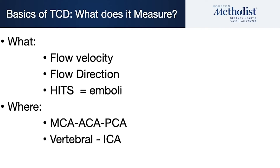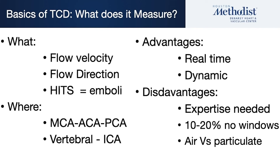For the simple surgeon: what does TCD tell me? Flow velocity — which direction blood is flowing inside the middle cerebral artery. So velocity, direction, and it shows us these high-intensity signals or emboli. Where does it monitor? Middle cerebral artery, ACA, PCA, and if you're good, vertebral and distal ICA.